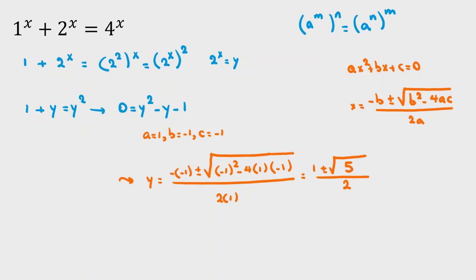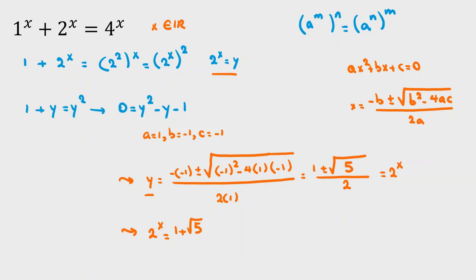Recall that y is 2 to the x. Since x is a real number, 2 to the x is always positive. So the negative root, negative 1, is not possible. Therefore, 2 to the x equals 1 plus root 5, all over 2.